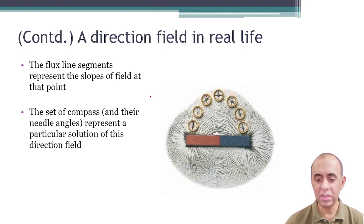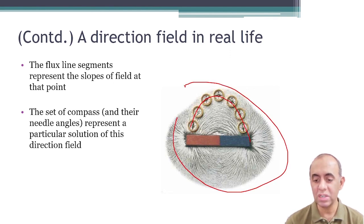Magnetic field is shown using flux lines, and if we place a compass on from one point and we take the compass into the direction of a particular flux line, it would follow the same pattern of direction. The compass will follow those directions. So you can say that this is a particular solution, whereas all of this is a direction field for the complete magnetic flux.